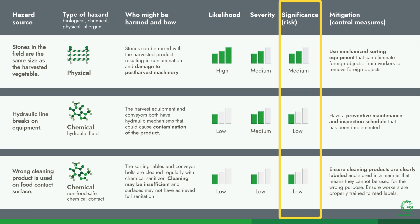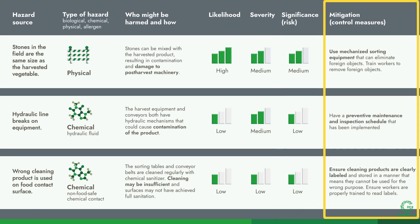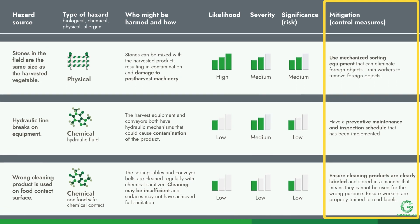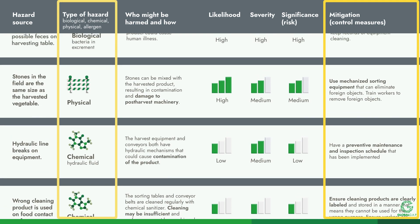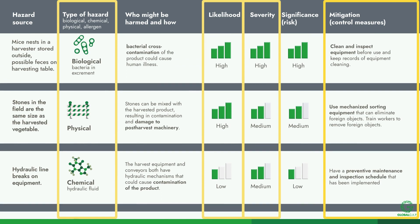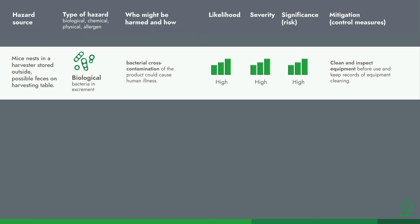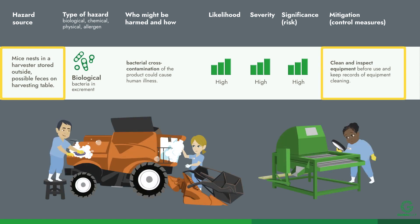Based on the risk, the producer can then think of ways to eliminate the source of the hazard or reduce the risk of the hazard with mitigation strategies. Mitigation strategies will vary based on the type of hazard, the likelihood of its occurrence, and potential severity. For example, to prevent biological contamination from mice, clean and inspect equipment before use, and keep records of equipment cleaning.